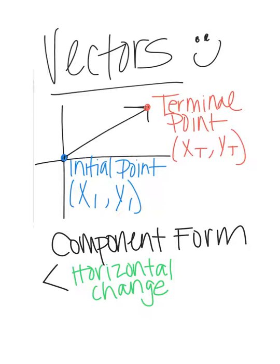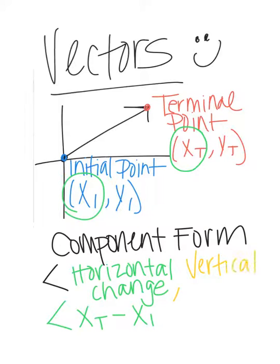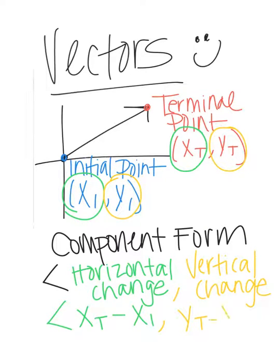To find the horizontal change, just subtract your terminal x from your initial x — so the formula is terminal x minus initial x. Then for the vertical change, that would affect your y's — how far up or down it has gone. So you would subtract terminal y minus initial y, and that gives you your component form.